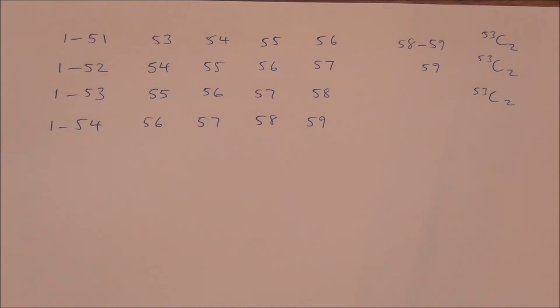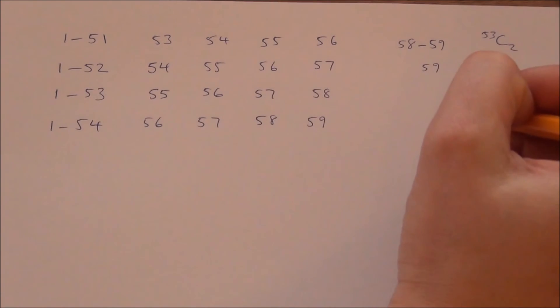And, finally, for the very last sequence, 56, 57, 58, 59, there's now 54 possible numbers at the start. So, that is 54 choose 2.